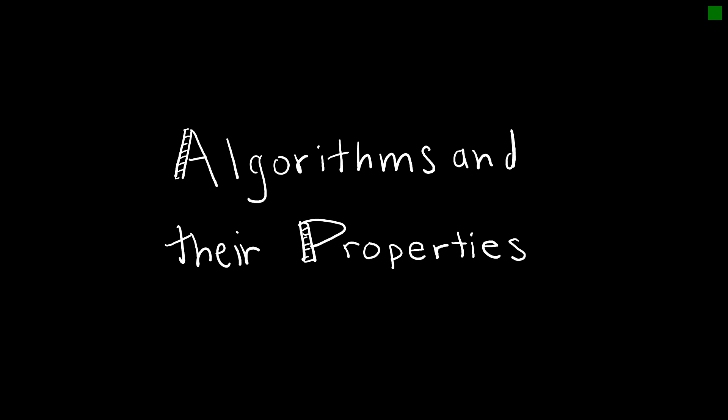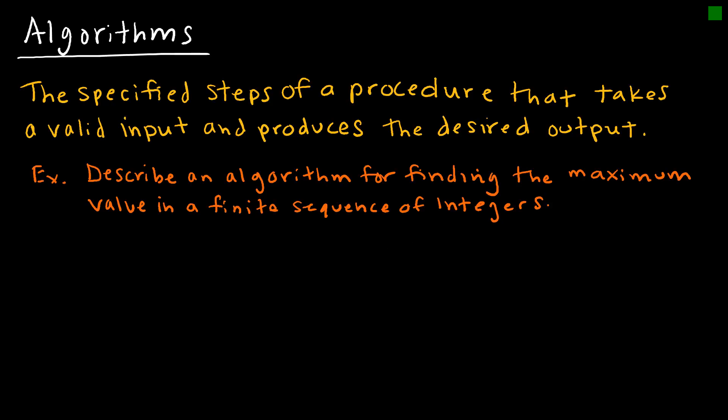In this video, we will learn about algorithms and their properties. An algorithm is just the specified steps of a procedure that takes a valid input and produces the desired output. For example, how might we describe an algorithm for finding the maximum value in a finite sequence of integers?